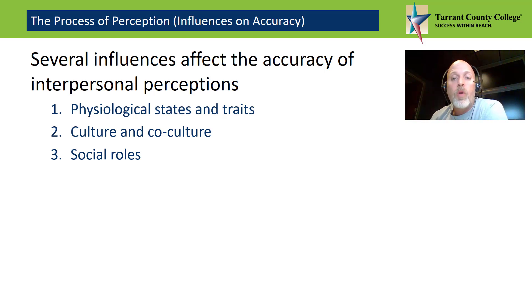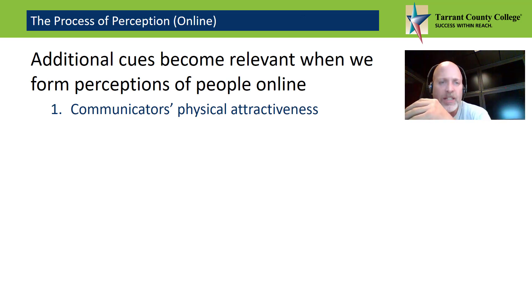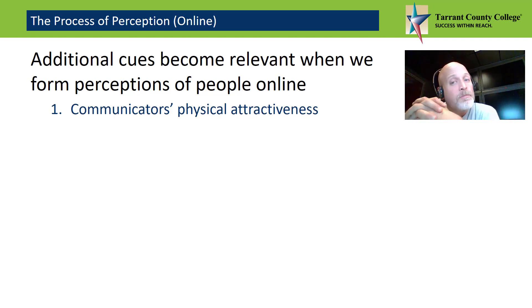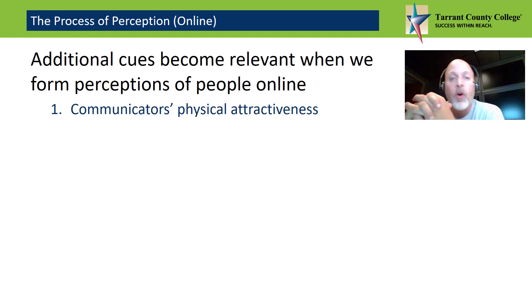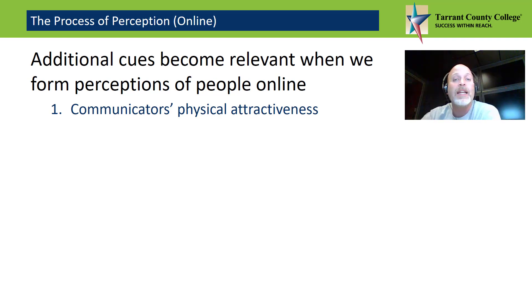And then finally, our social role is a set of behaviors that are expected of someone in a particular social interaction. Now, in our text, the researchers have documented some great articles finding that physically attractive men were perceived to communicate as kinder, more intelligent, more confident, and in more humorous ways compared to their less attractive counterparts.